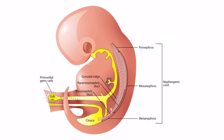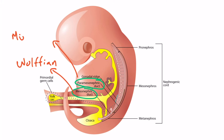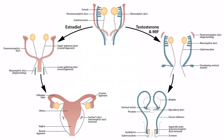Returning to the image, we can see the mesonephric duct and the paramesonephric duct. The mesonephric duct is also known as the Wolffian duct, and the paramesonephric duct is also known as the Müllerian duct. These structures are influenced by hormones and ultimately become either male or female internal genitalia. Instead of looking at these from a lateral view, let's look at them from the front of the fetus, which will allow us to see how these structures change over time more easily. Here we can see the undifferentiated gonads and both ducts. Let's focus on male development first.